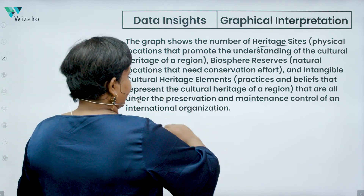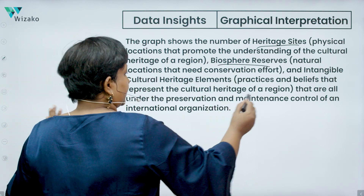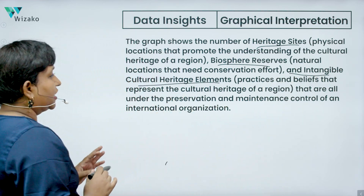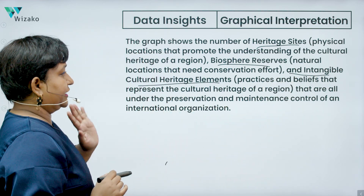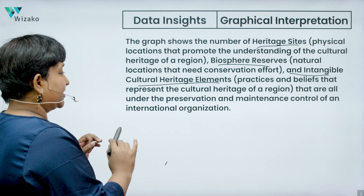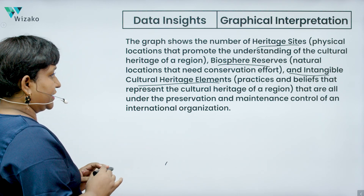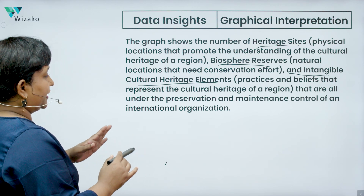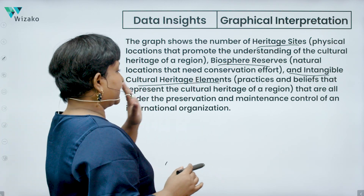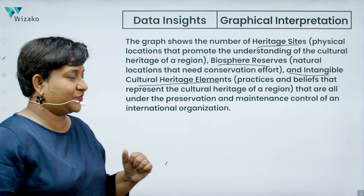The graph shows the number of heritage sites, biosphere reserves, and intangible cultural heritage elements. These are the three things that are all under the preservation and maintenance control of one specific international organization, and the graph is showing those three different types of things.